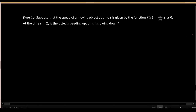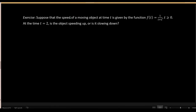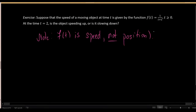Let's conclude with a more conceptual problem. Suppose f of t measures the speed of an object — so be careful, unlike recent problems, this is not a position function. This function already tells you how fast the object is moving, not where it's located. You have to read the question carefully each time to know exactly what quantity f of x represents.